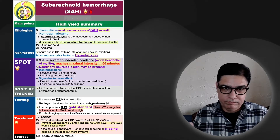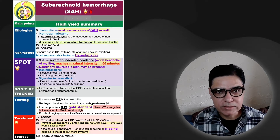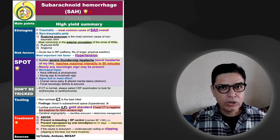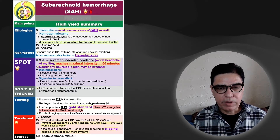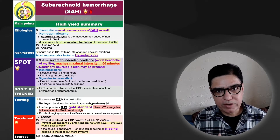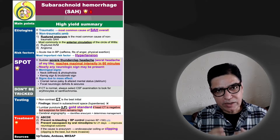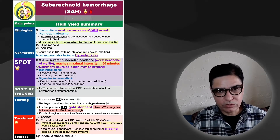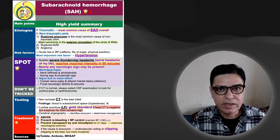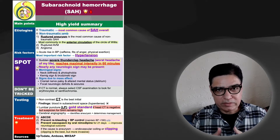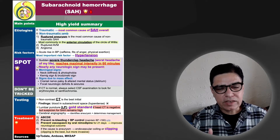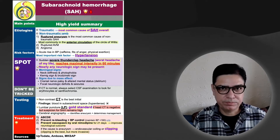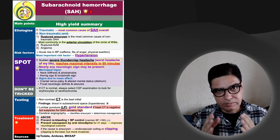By definition, subarachnoid hemorrhage is bleeding into the subarachnoid space. The brain is covered by three layers: the dura mater, the arachnoid mater, and the pia mater. The subarachnoid space is the space between the arachnoid mater and the pia mater. The pia mater is the innermost lining covering all the surface of the brain, dipping down into the sulci and covering the gyri. This space is traversed by different veins known as the bridging veins.